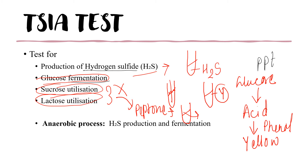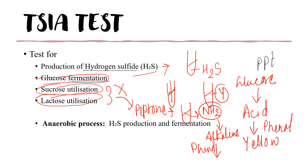When bacteria utilize peptone, there will be deamination — removal of the amino group. Deamination produces alkaline conditions. In alkaline conditions, the phenol red indicator will change to pink in color. In this way we can determine whether the bacteria are utilizing sucrose, lactose, or peptone.